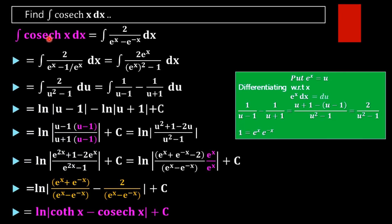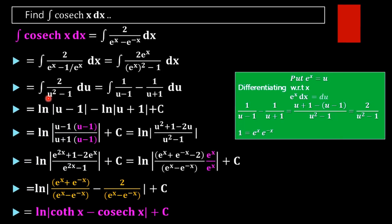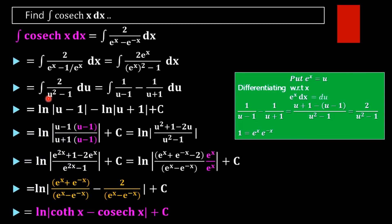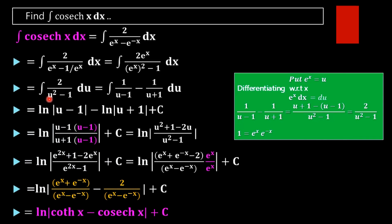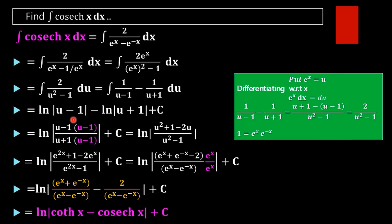If you don't want the function in hyperbolic form, you can stop at the log|(u−1)/(u+1)| step and simply substitute e^x back in place of u.